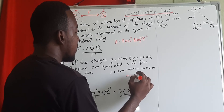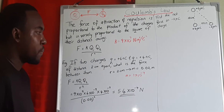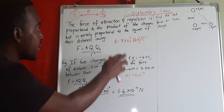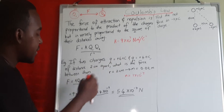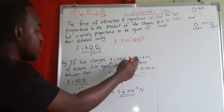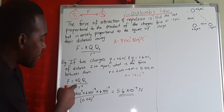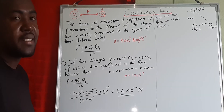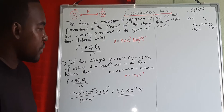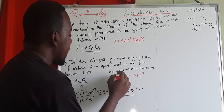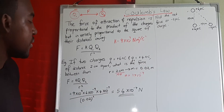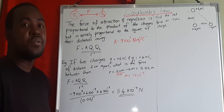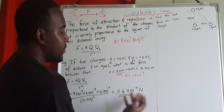Nano is a prefix meaning 1 times 10 to the negative 9. Using F = kq1q2/r²: k is 9 times 10 to the 9, q1 is 6 times 10 to the negative 9, and q2 is 4 times 10 to the negative 9. The distance r is in centimeters, so we convert to meters by dividing by 100, giving 0.02 meters, which we then square. This gives F = 5.4 times 10 to the negative 4 newtons.